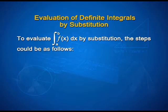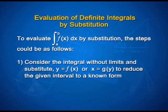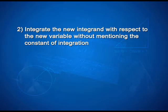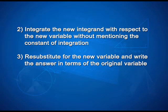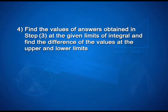Now let us discuss the evaluation of definite integrals by substitution. To evaluate ∫ₐᵇ f(x) dx by substitution, the steps are: first, consider the integral without limits and substitute y = f(x) or x = g(y) to reduce the given integral to a known form. Second, integrate the new integrand with respect to the new variable without mentioning the constant of integration. Third, resubstitute for the new variable and write the answer in terms of the original variable. Fourth, find the values at the given limits and find the difference of the values at the upper and lower limits.